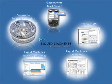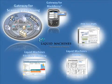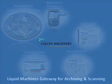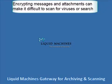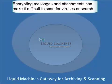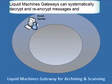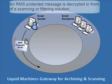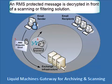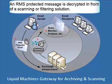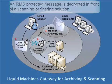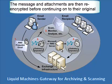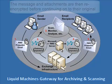One of the challenges that can result from working with encrypted files is ensuring they remain compatible with virus scanning and indexing tools for archives. Liquid Machines gateway for archiving and scanning can systematically decrypt and re-encrypt messages and attachments so that they can be made available for filtering, or for scanning and indexing for an archiving system. An RMS protected message is decrypted in front of a scanning or filtering solution, and then the message and attachments are re-encrypted on the way out before continuing on to their original destinations.